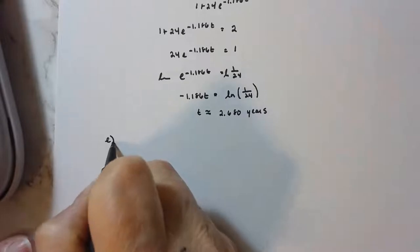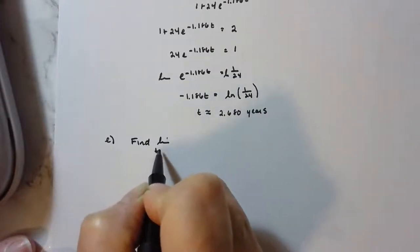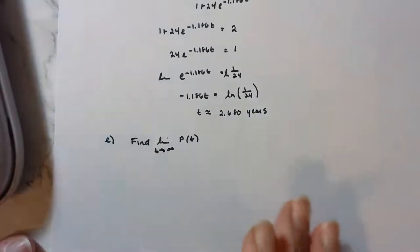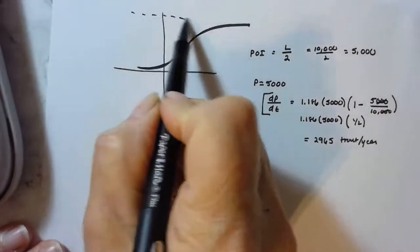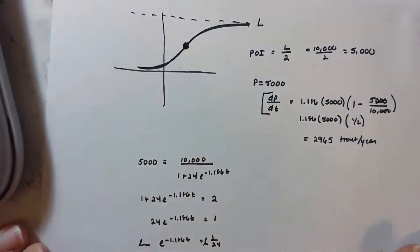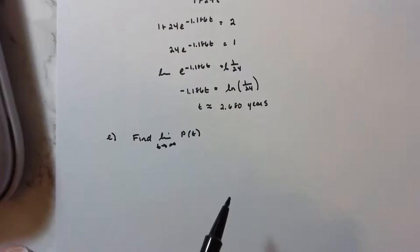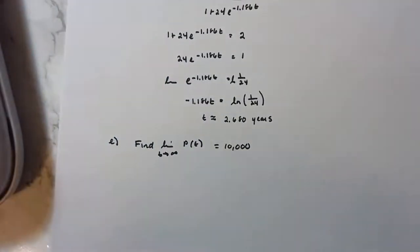Part (e): Find the limit as t approaches infinity of P(t). Looking back at the logistic curve, the population approaches the horizontal asymptote L — the limiting or carrying capacity. As t → ∞, P(t) → 10,000. If there are ever more than 10,000 fish in the lake, we'll have a problem.